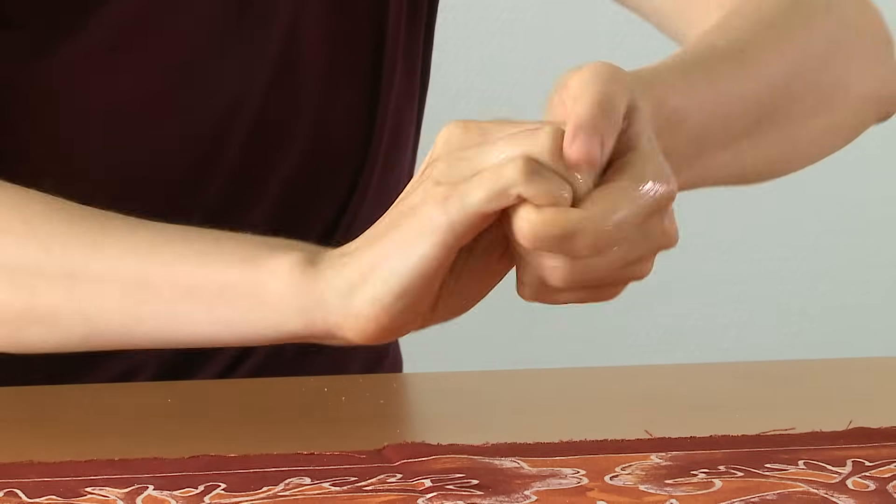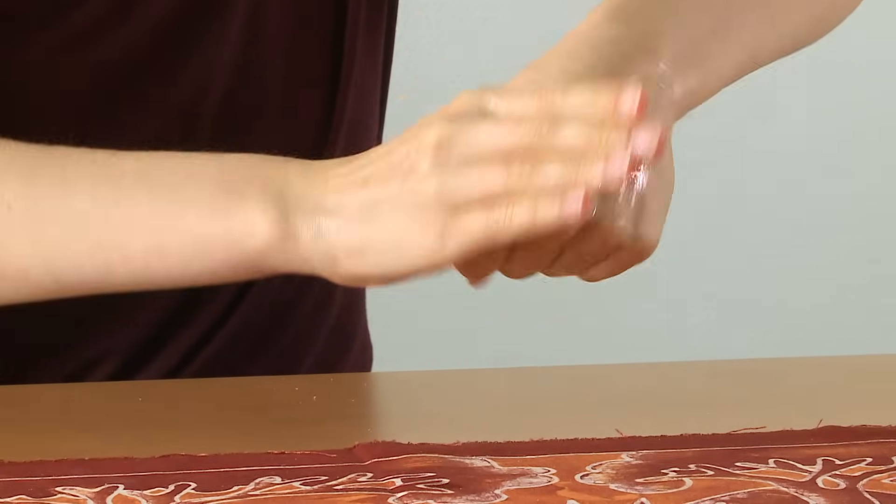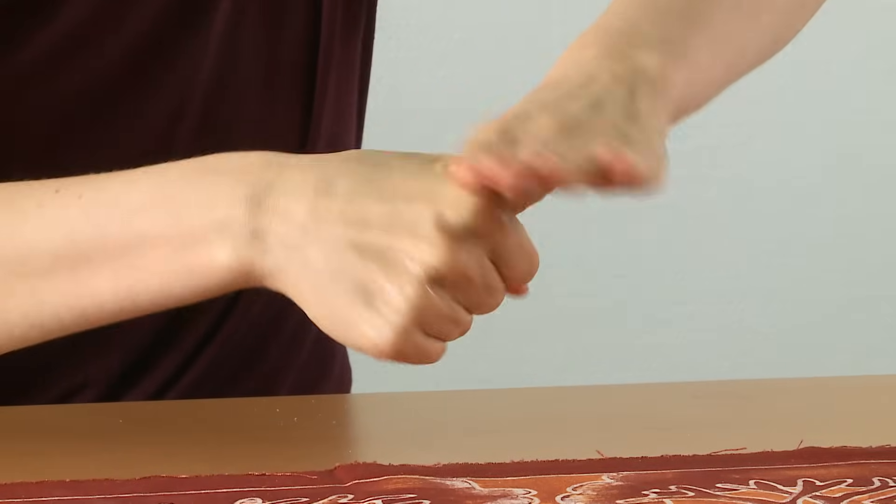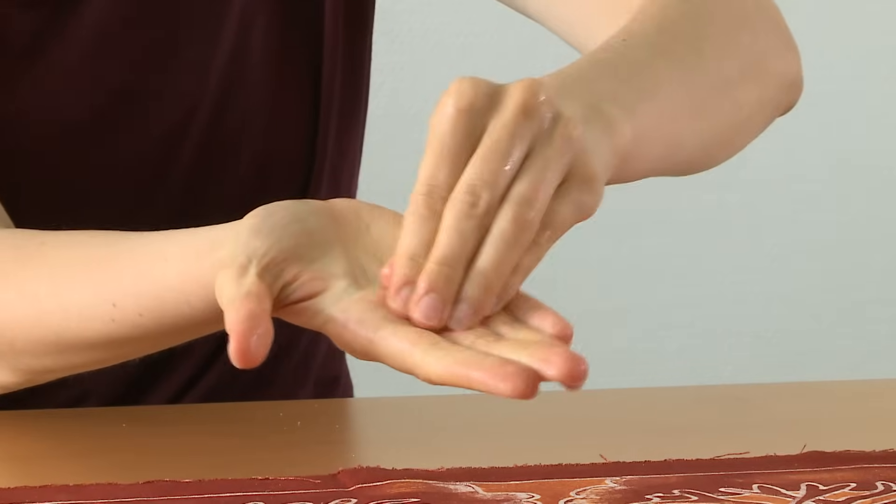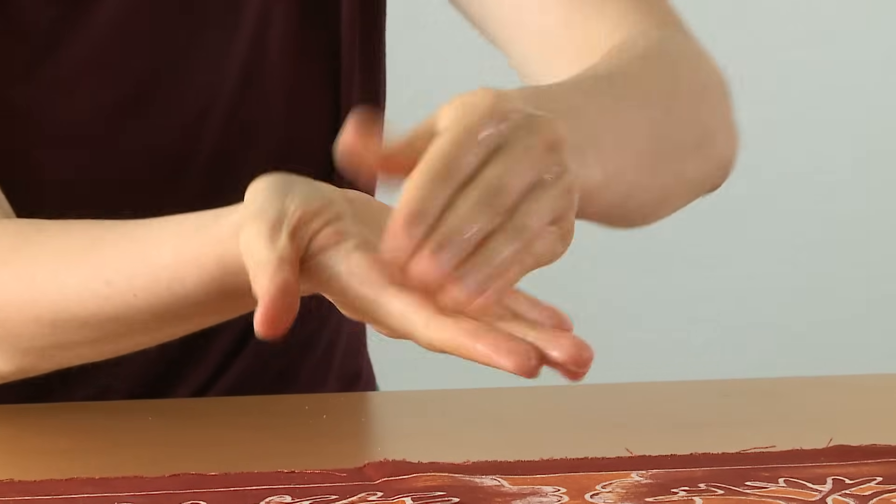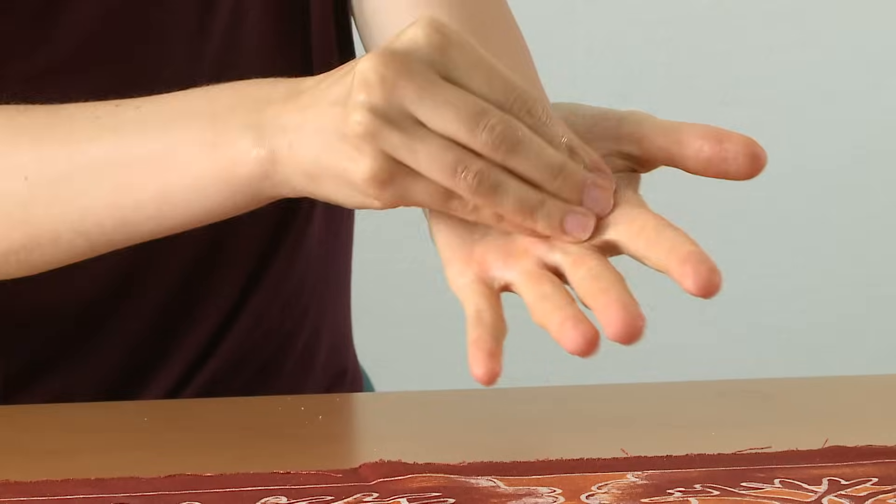Rub rotationally left thumb clasped in right palm and vice versa. To clean the tips of your fingers, rub rotationally backwards and forwards with clasped fingers of right hand in left palm and vice versa.